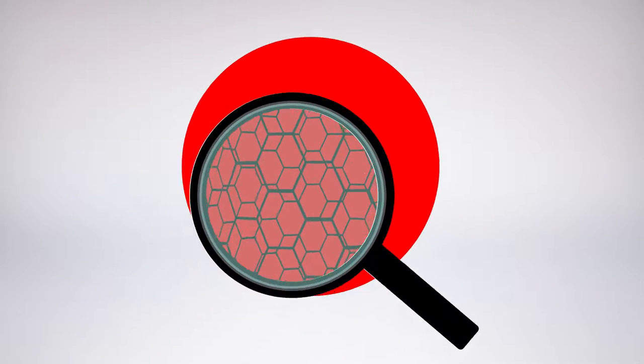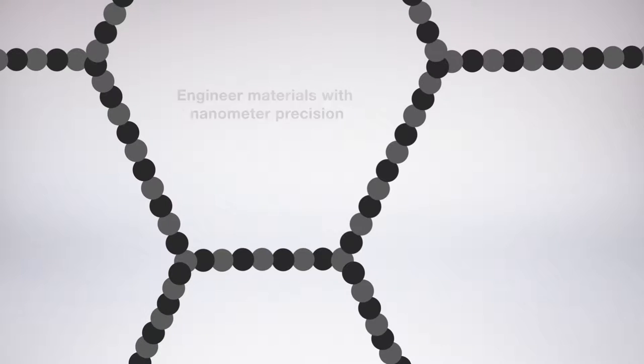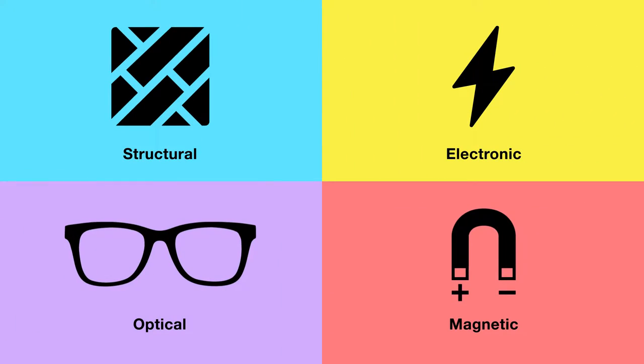At very small scales, matter exhibits bizarre behavior. The ability to engineer materials with nanometer precision has allowed researchers to exploit this behavior to produce materials with novel and often exotic structural, electronic, optical, and magnetic properties.